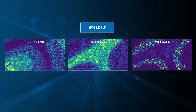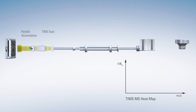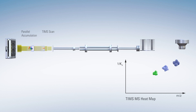The throughput allows us to do larger clinical cohorts. The addition of ion mobility gives us the tools to structurally separate our molecules and actually be more precise in our identification and separation of the molecules that occupy a single pixel.